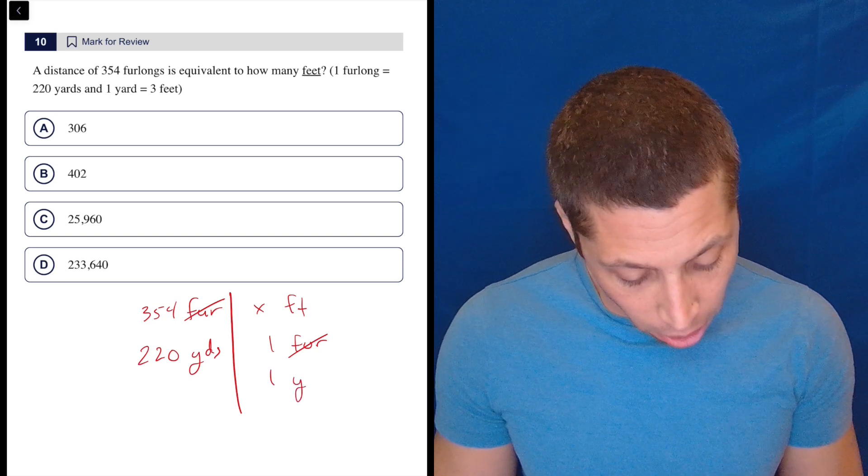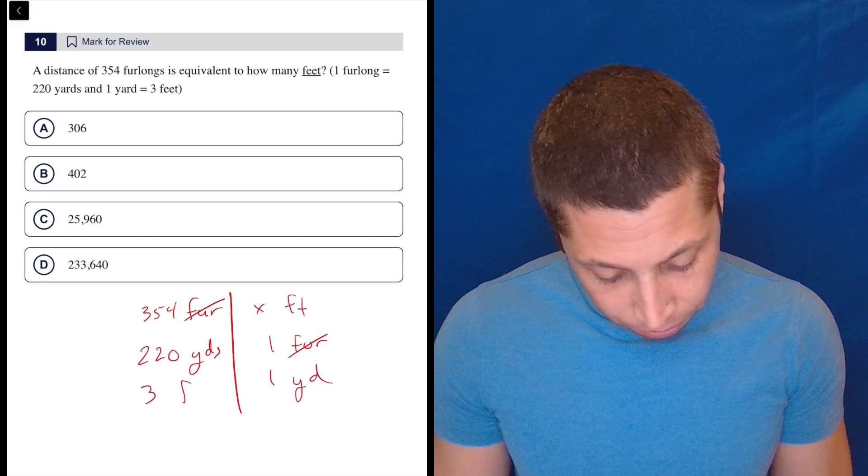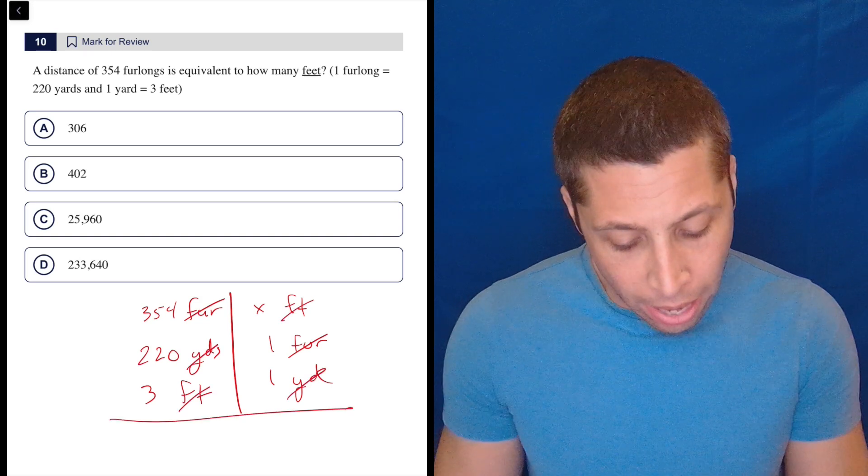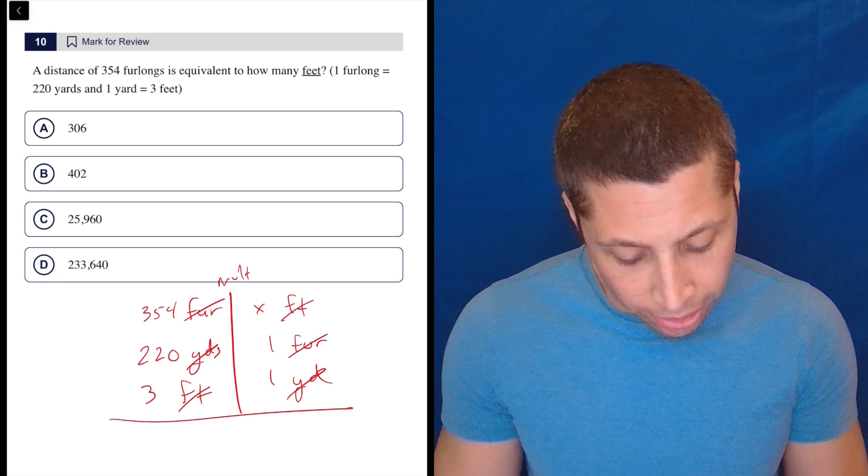And then the same thing with the yards. One yard is three feet. So yards are gone, yards are gone. And look at that. Feet are also gone. That's how I know I'm done. And now you multiply down the list.